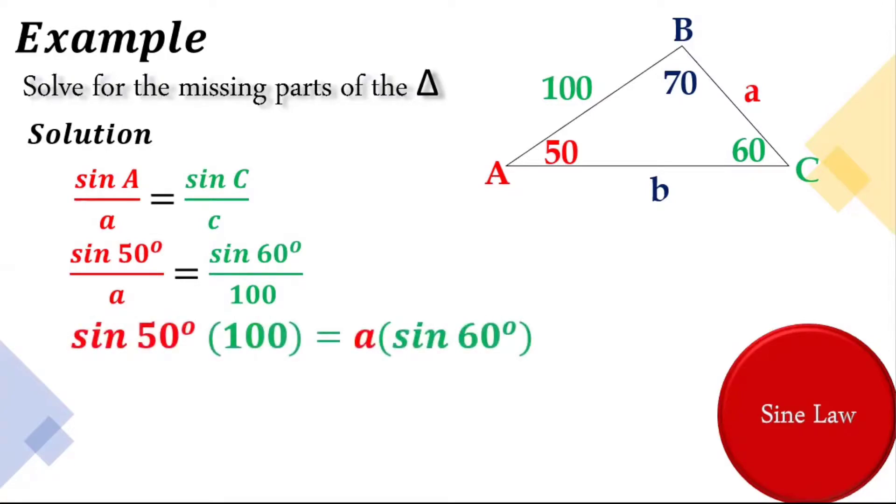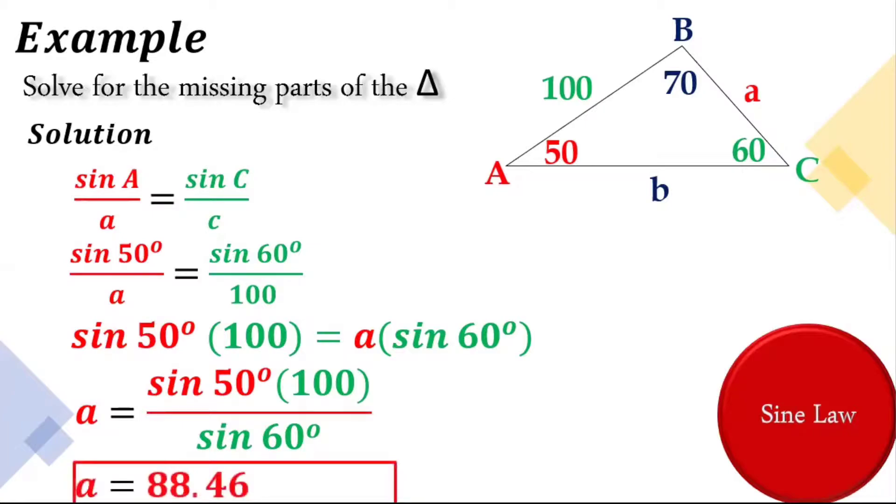Let's do the cross multiplication. After cross multiplication, we have to divide both sides by sine 60 degrees. And we have this, a is equal to sine 50 degrees times 100 over sine 60 degrees. Using calculator, let's compute the approximate length of side a, and that is 88.46.